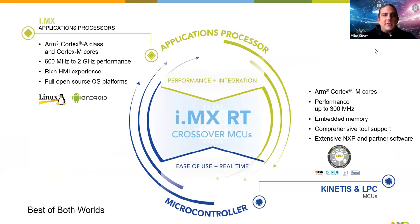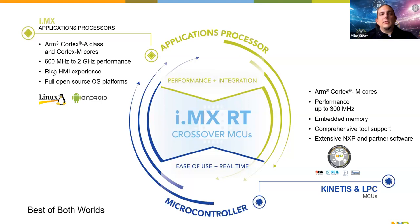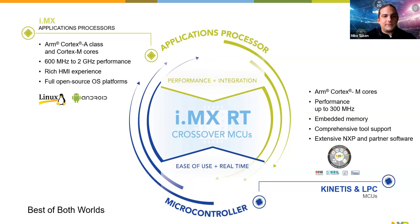i.MX devices run on A-cores and can be combined with Cortex-M cores — you can run low-level things on the M-core and Linux or Android on the A-core. Our i.MX portfolio offers performance from 600 MHz up to 2 GHz, rich GUI experience, multiple display support up to 4K resolution, and runs Linux and Android — mainly open source, with paid variants available through partners.